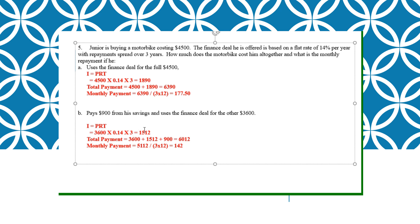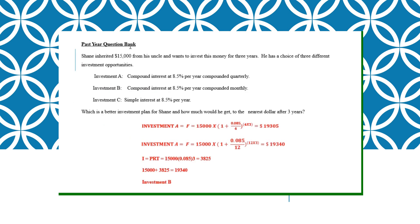This part B says $900 is from his savings. So if $900 is from his savings, meaning now your principal is only $3,600. So it's $1512. So your total payment is $3,600 plus $1,512. Why you must add $900? $900 is also the cost. If you also pay $900, so that is the cost. But when you find monthly payment, you cannot add the $900. It should only be the principal plus interest, $5,112.